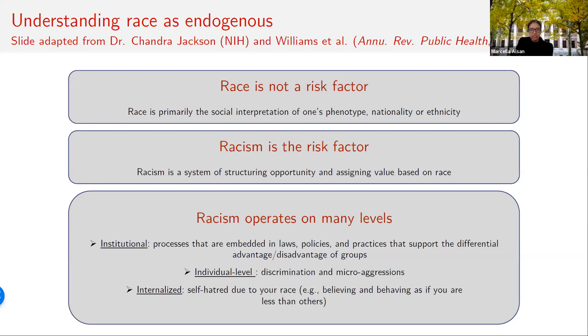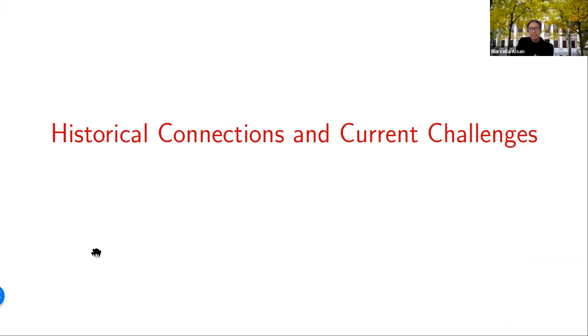Lastly on the slide, we see that racism operates on many levels — including not only individual or personally mediated through discrimination and microaggressions, but also institutional through laws, policies, and practices that support the relative advantage or disadvantage of certain groups, and finally, internalized. Next, we'll look at some examples of these different types of racism, their historical antecedents, and current challenges.